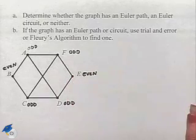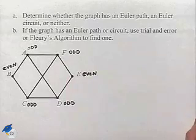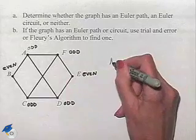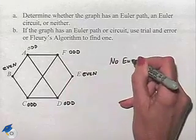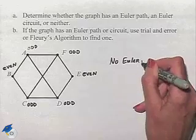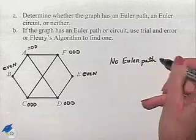Now, any time we have a graph that has more than two odd vertices, we can conclude that there is no Euler path. And of course, if there's no Euler path, then there can't be an Euler circuit.